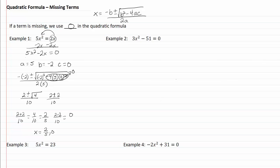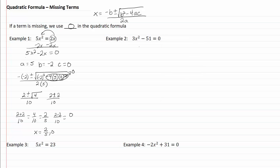In example three, we have everything on one side already, so we identify our a, b, and c. Our a is always the x squared term, so that will be 3. Our b is always the x term — in this case there isn't one, so b equals zero. Our c is always the constant, which would be negative 51.